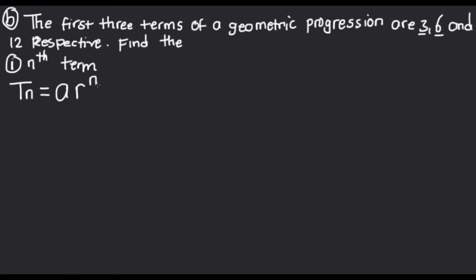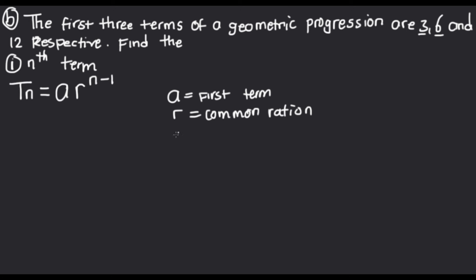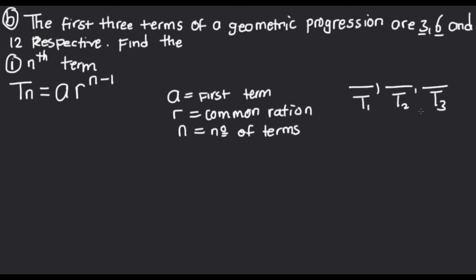To find the nth term we write the formula for a GP: T_n equals a times r raised to the power n minus 1. That is our formula, where a is the first term in the sequence, r is the common ratio — the number you multiply by one term to get the next — and n is the number of terms. For finding the nth term, the value of n should not be substituted.